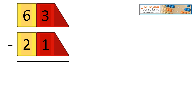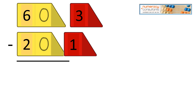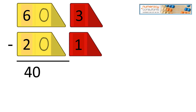We have 63 minus 21. Just like with addition, we're going to split off the ones and split off the tens. So we end up with 60 minus 20, and 3 minus 1. 60 minus 20 is 40, and 3 minus 1 is 2. Our answer is 42.